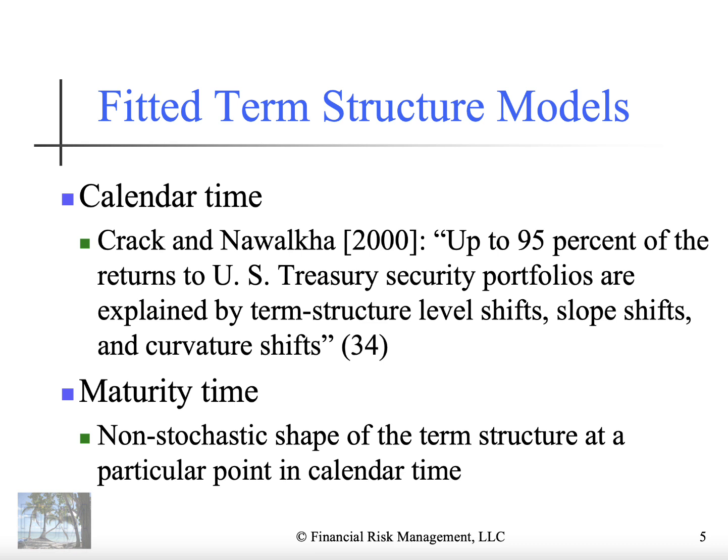There's a lot of research on fitting the term structure of interest rates, which is a mapping of yield for a particular instrument versus maturity. Crack and WACA documented that up to 95% of the returns to U.S. Treasury securities portfolios are explained by term structure level shifts, slope shifts, and curvature shifts. Leveraging that notion, my experience is that even with 30,000 risk factors, generally 5 to 10 factors is plenty to explain a high level of variability.